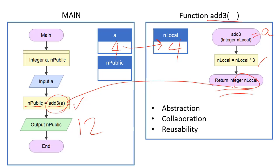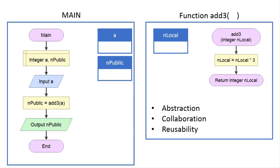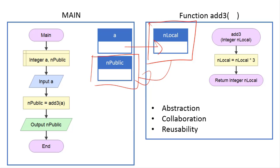Now let's go back to this naming. We have npublic here and nlocal here. Even though they might be working with something similar — a sends the value to nlocal and nlocal has been assigned back to npublic — keep in mind that these are two separate locations, meaning they do not know each other. The only way to send a value from one location to another is through calling, which is this line, or sending a return back by this line. That's the only way, which means you can never use nlocal in the main area, and you can never use npublic or a in the function area.